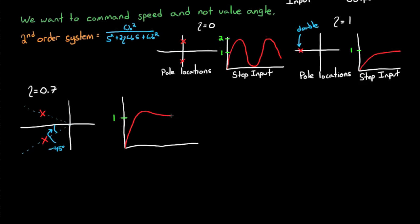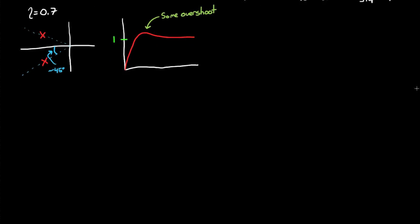The response should look something like this, in between the two extremes. A little bit of overshoot, but we'll see by the end of this video that the zeros in this transfer function make it behave a little bit different than the standard second-order system, but the overall shape is still there.